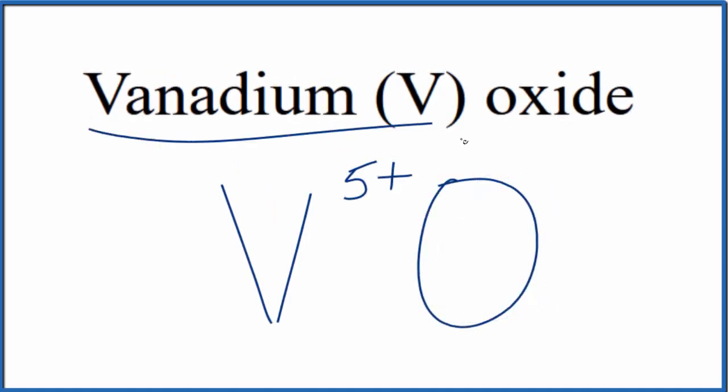So vanadium, that's a transition metal. That's why we have the Roman numeral five here. The oxide, that's oxygen, that's a nonmetal. So we have a metal, nonmetal, we're going to treat this as an ionic compound.